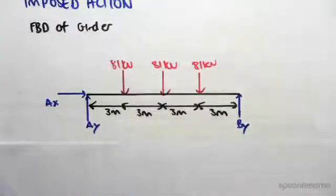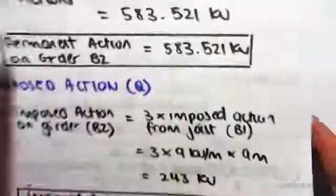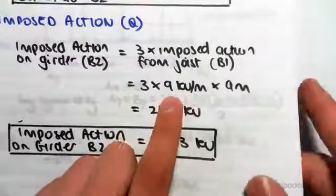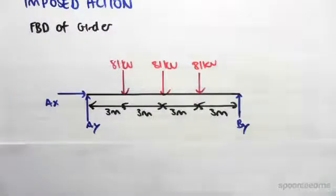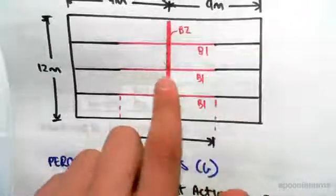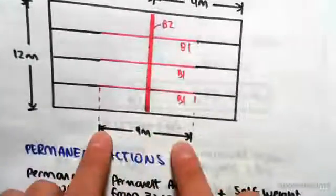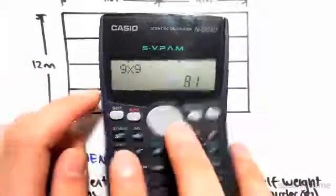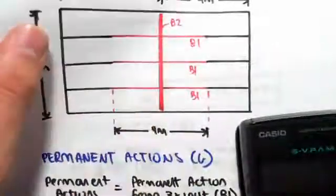Now we found in two videos ago, we found that the live load was nine kilonewton per meter along the joists. So we saw that these joists carry nine kilonewton per meter of force, and we multiply that by the length nine. So nine by nine gives us 81. So each of these point loads is 81 kilonewtons.